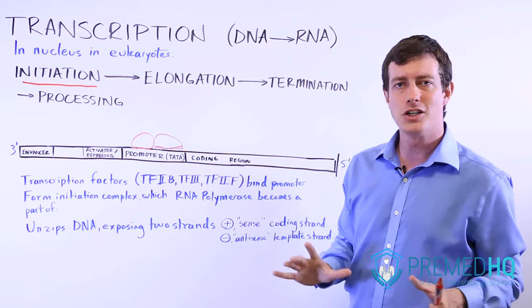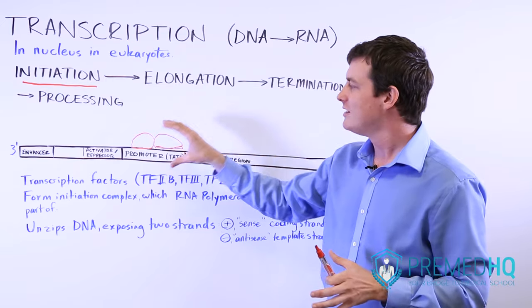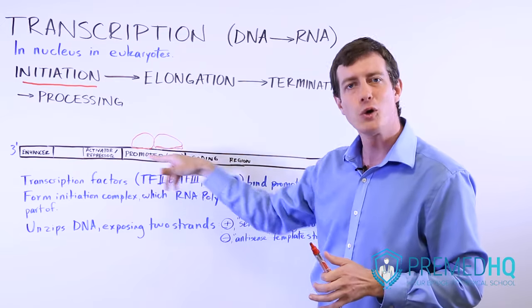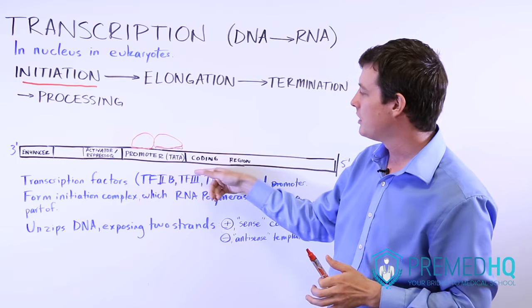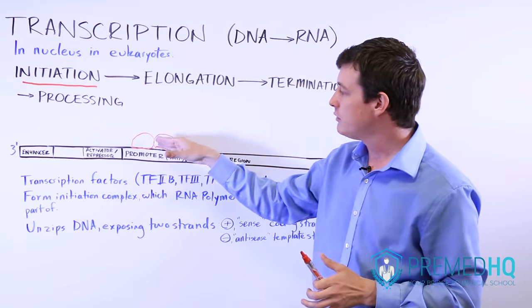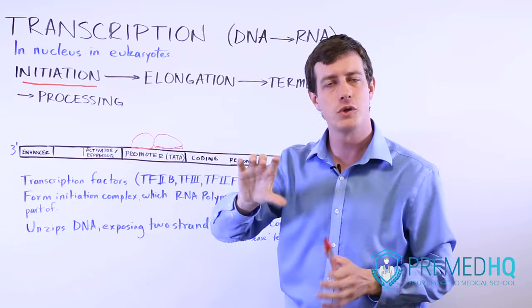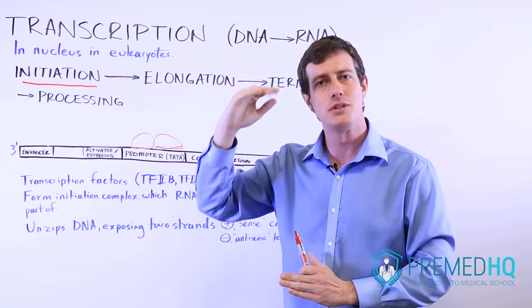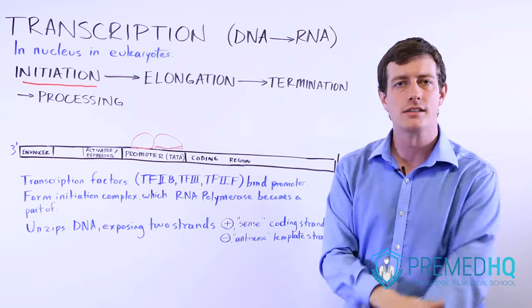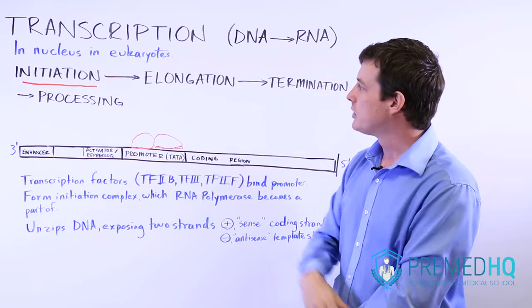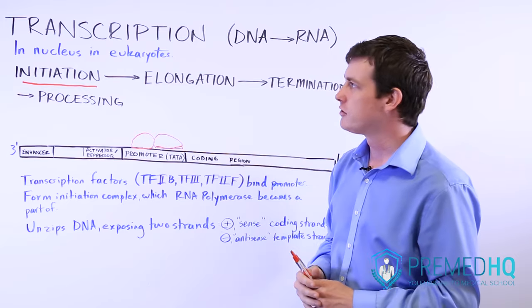But the key thing about initiation is that you need to form this initiation complex at the promoter region, which is just upstream of the coding region. Once you form this, the RNA polymerase joins, forms that bubble, and then it can begin the process of elongation, which is the next phase in transcription.